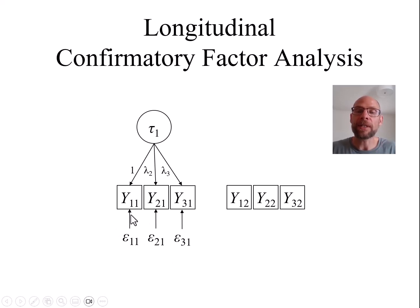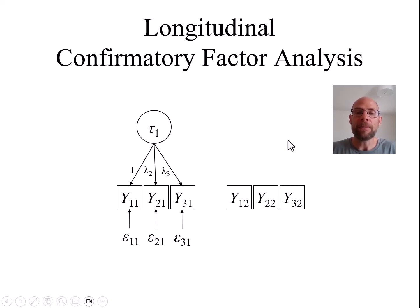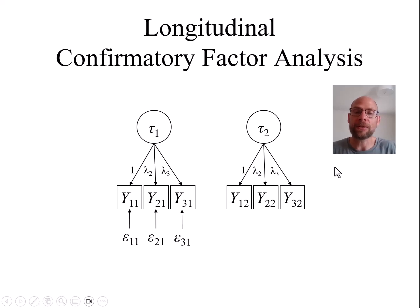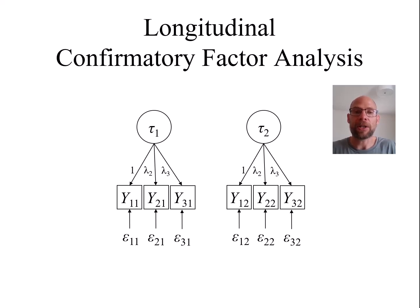This allows us to separate true score variance — true inter-individual differences in our construct — from measurement error at a given time point. We can have the same measurement model at time two, again with a factor reflecting subjective well-being at the second time point, and measurement error variables reflecting random measurement error. The parameters lambda are factor loadings, estimated as in a conventional cross-sectional confirmatory factor analysis.